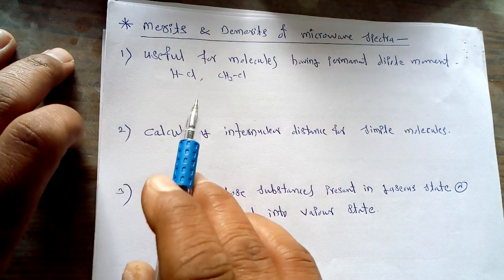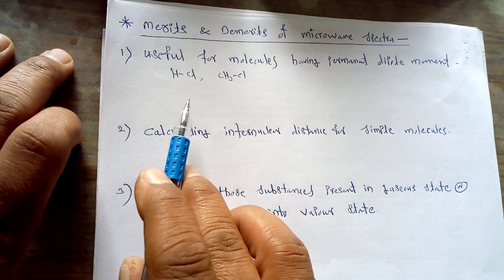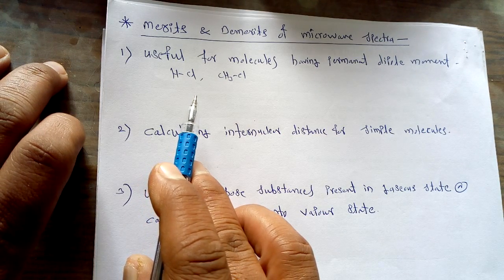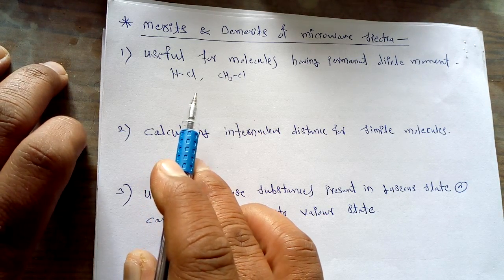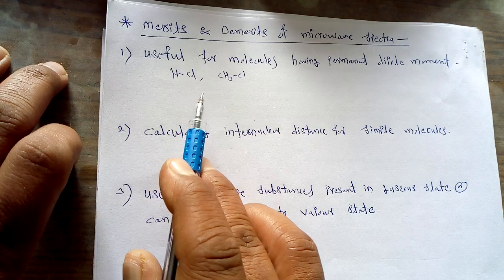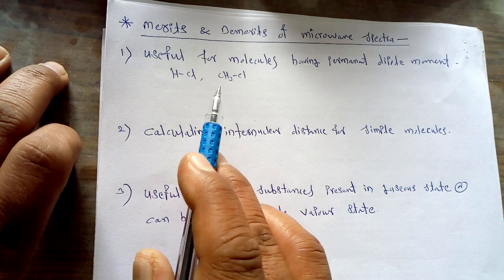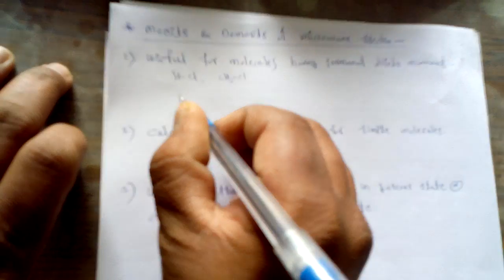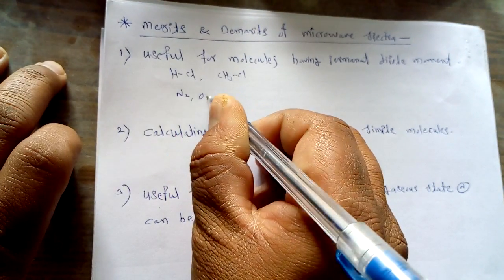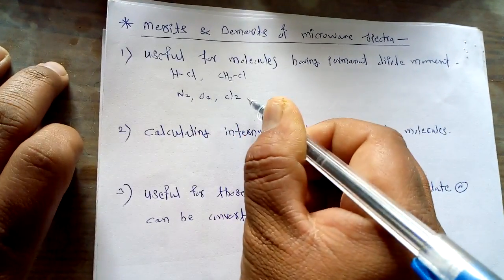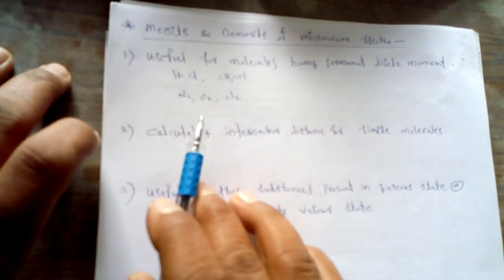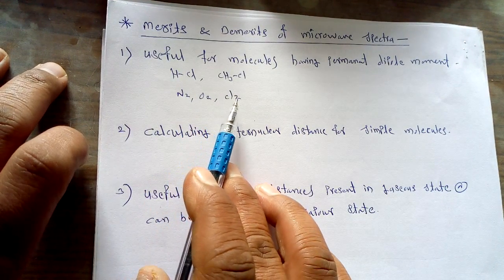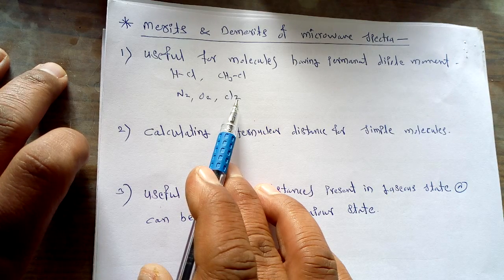On the other hand, considering its demerits, this technique cannot be used for molecules that have zero dipole moment or do not have a permanent dipole moment — molecules like N₂, O₂, and Cl₂. These molecules, which cannot possess a permanent dipole moment, cannot be studied by microwave spectroscopy.